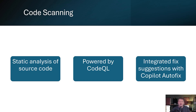Let's dive into the first component: code scanning. Code scanning analyzes your source code to find security vulnerabilities and coding errors before you deploy. It uses static analysis, which means it examines your code without actually running it. The primary engine behind code scanning is CodeQL, GitHub's own semantic code analysis engine. But you're not limited to CodeQL — you can also integrate third-party tools that output results in a SARIF format.